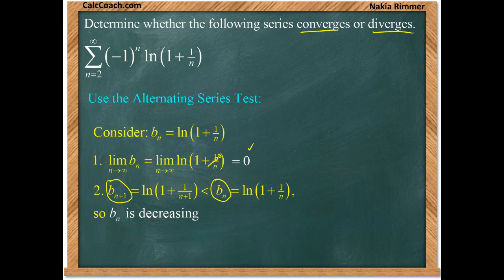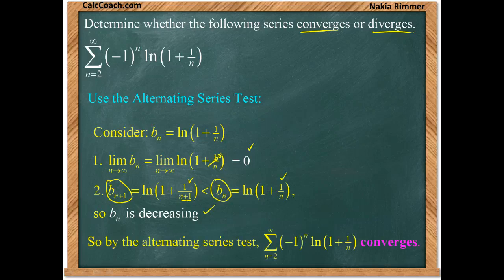And it's true. Let me just quickly explain. Having a larger denominator makes the entire thing smaller. So these two fractions, the one in the n plus 1 is smaller than the one that's in the n. 1 plus something smaller is smaller. Natural log of something smaller is smaller. Yes. B sub n is decreasing. Well, that's it. That's enough to say that the series converges.